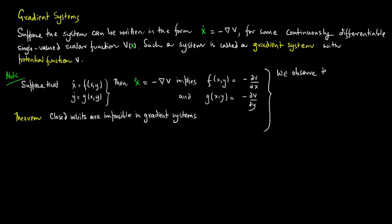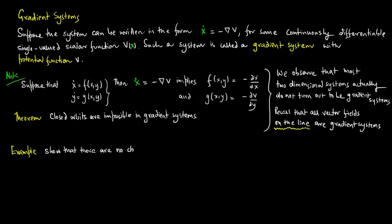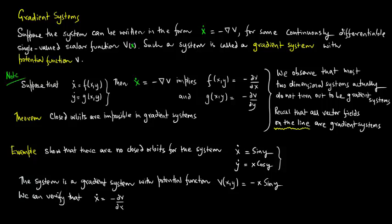Most two-dimensional systems actually do not turn out to be gradient systems. Recall that all vector fields on the line are gradient systems. As an example, show that there are no closed orbits for the system X-dot equals sin Y and Y-dot equals X cos Y. The system is a gradient system with potential function V(X, Y) equals minus X sin Y, and we can readily verify that X-dot equals minus dV/dx and Y-dot equals minus dV/dy. So by the above theorem there are no closed orbits.